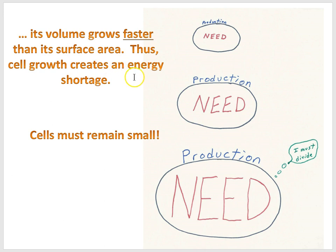Thus, cell growth creates an energy shortage. So, in the picture, while the word production is getting bigger as the surface area of the cell gets bigger, the word need here, which relates to the energy need of the cell, and that's related to the volume, the word need is getting bigger faster. And so notice then the production here may not be able to meet the needs of the cell.